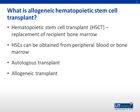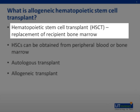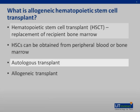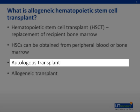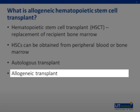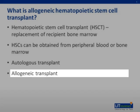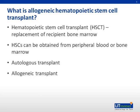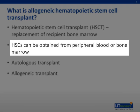To put it simply, hematopoietic stem cell transplant is replacement of the recipient bone marrow with donor hematopoietic stem cells obtained either from an autologous — which is self — or allogeneic — which is a donor other than one's self. These stem cells can be obtained either from the peripheral blood, bone marrow, or cord blood in the case of an umbilical cord blood transplant.